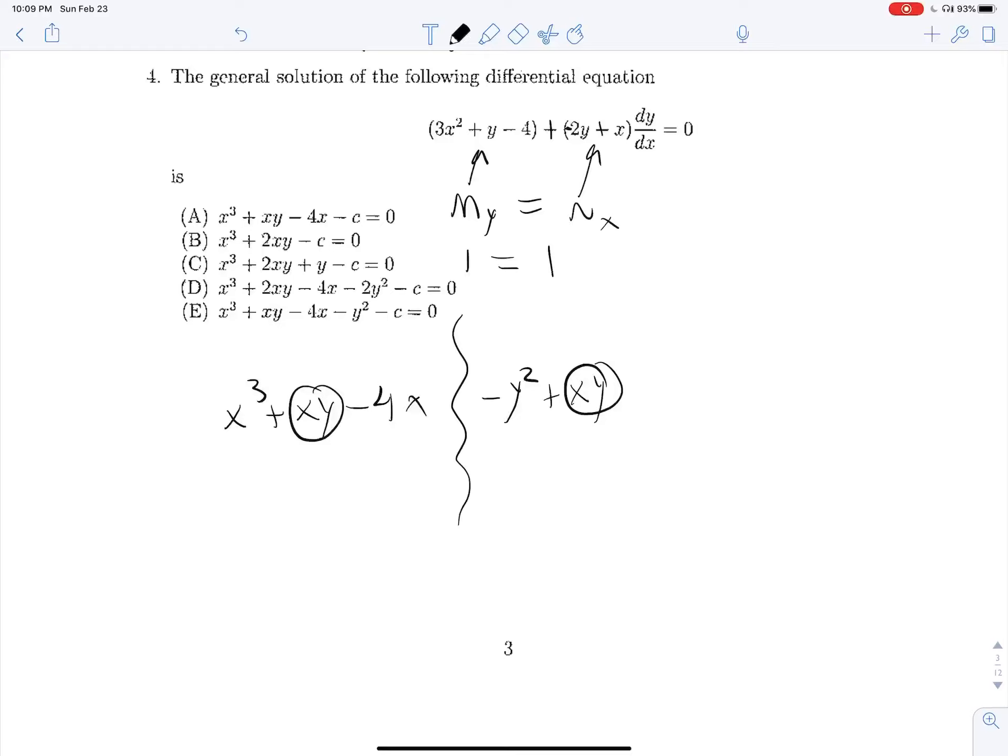And then on the other side, the integral of n with respect to y will give us minus y squared plus xy. So we see that because both m and n both had to come from the same overall function, we're only going to count this xy once. And so finally, our answer becomes x cubed plus xy minus 4x, taking these three terms from over here. And then the only one we're going to count from our right side is minus y squared is equal to c. And we see that that corresponds with answer choice E. 4 is E.